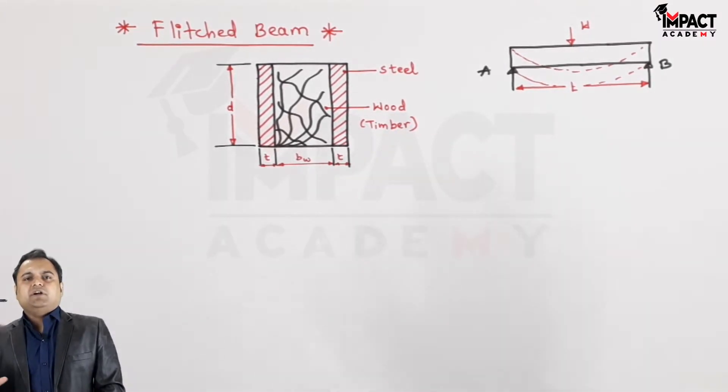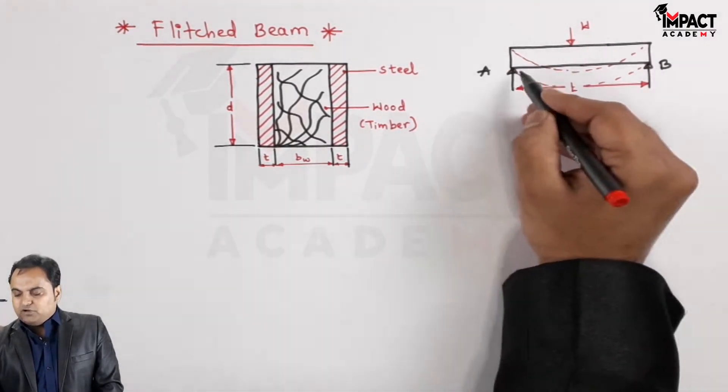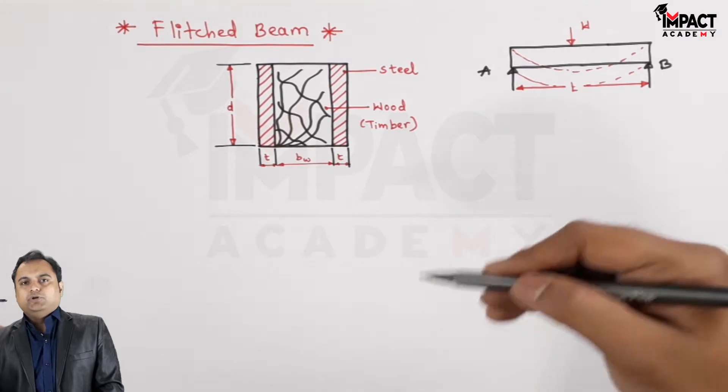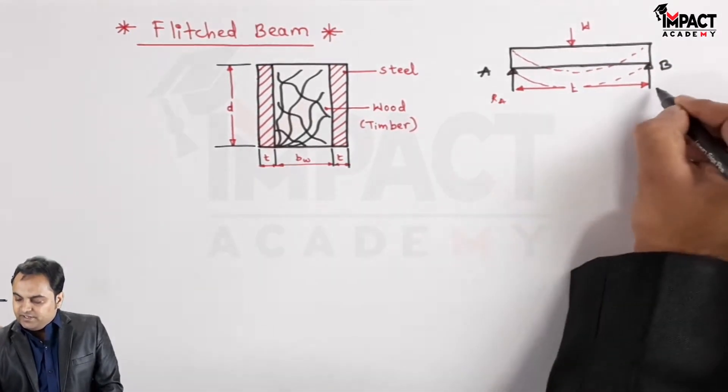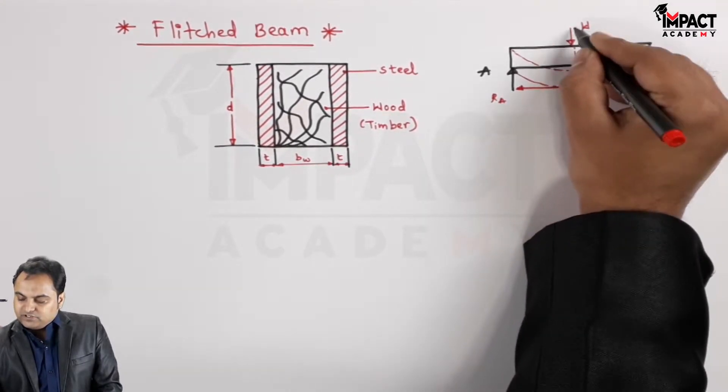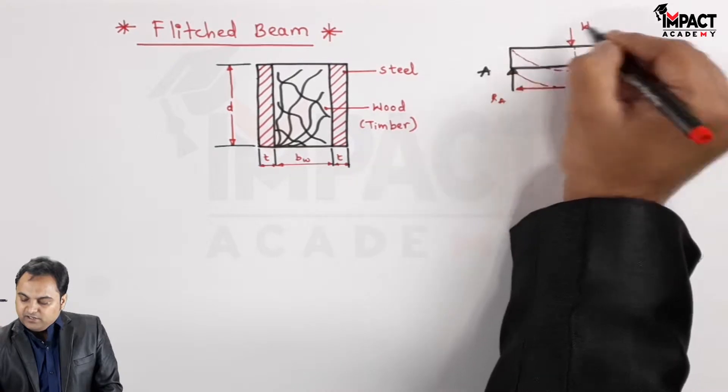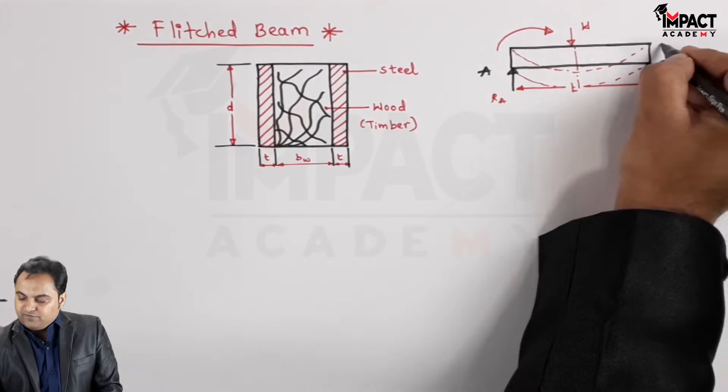So that is why we are using composite material because the beam is bending because of some external loading like here there is w. When I take the reaction at A and reaction at B, considering the center of this beam, because of r_a, this beam is going to bend in this fashion